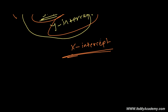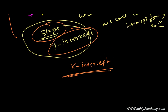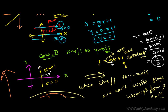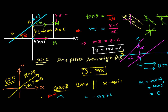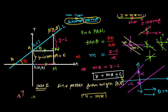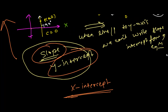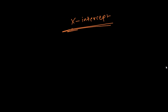Now slope-intercept form — when we are given the x-intercept and the slope of the line. Same as we did when given the y-intercept and the slope, we found the equation y = mx + c. That was the slope-intercept form. Now if we are not given the y-intercept but instead given the x-intercept, how do we find the equation? Let's try to learn that here.